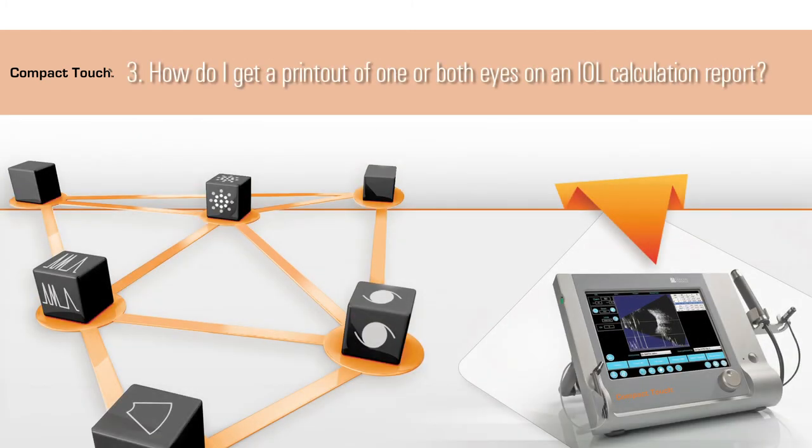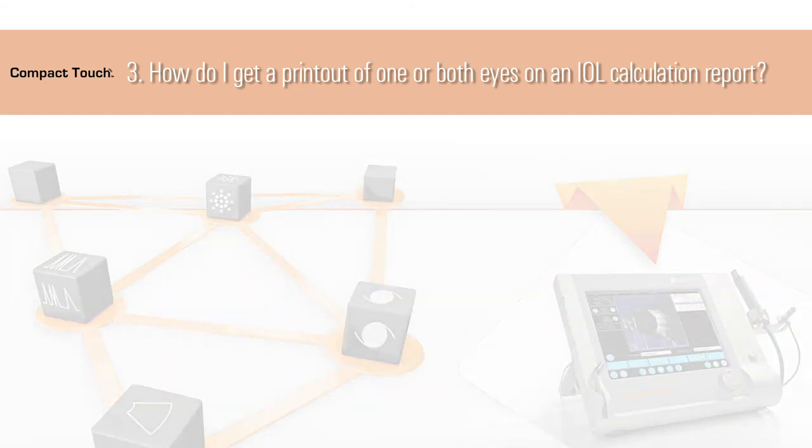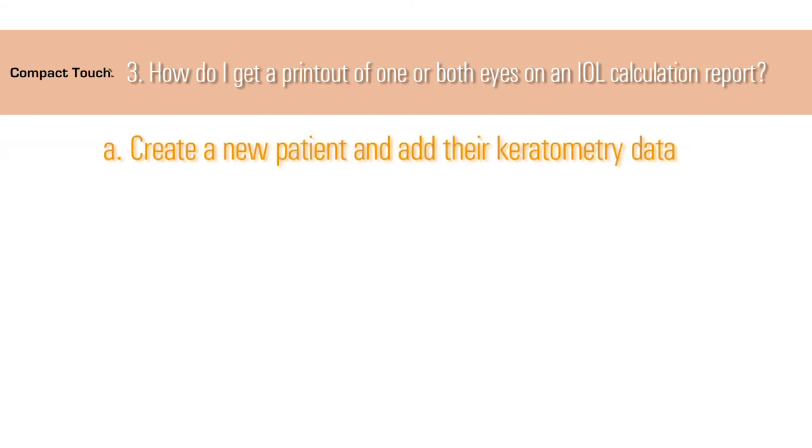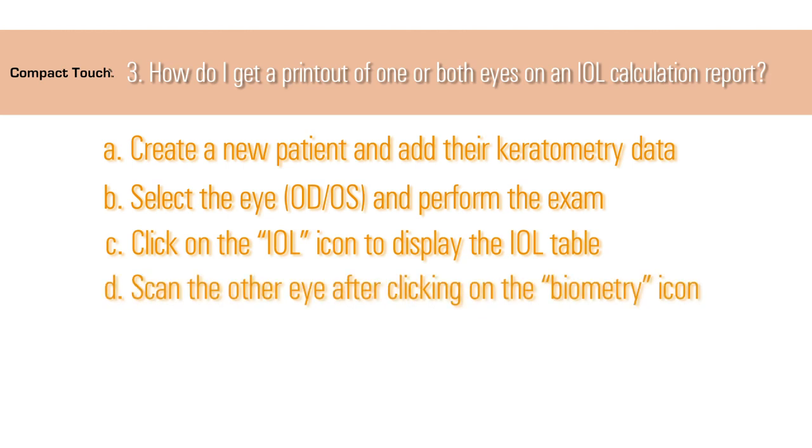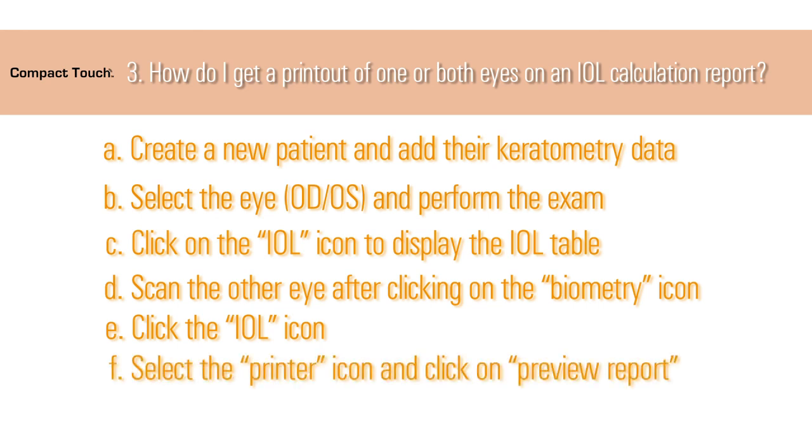3. How do I get a printout of one or both eyes on an IOL calculation report? First, create a new patient and add their keratometry data. Next, in the Biometry Exam page, select the eye (OD, OS) and perform the exam. Click on the IOL icon to display the IOL table. Scan the other eye after clicking on the Biometry icon. After measuring the second eye, click the IOL icon. Lastly, select the Printer icon and click on Preview Report.